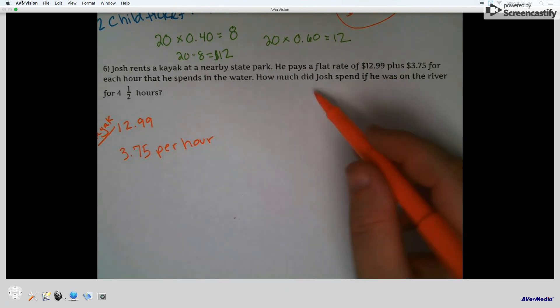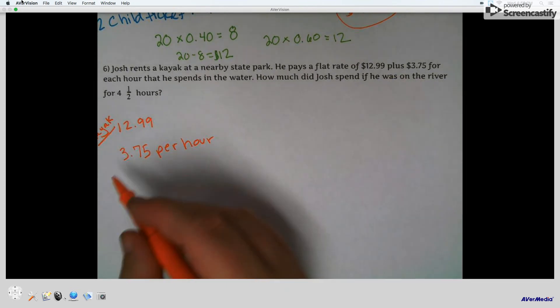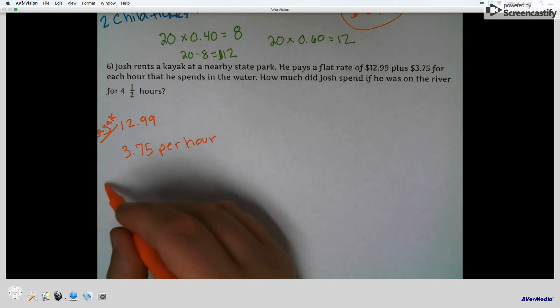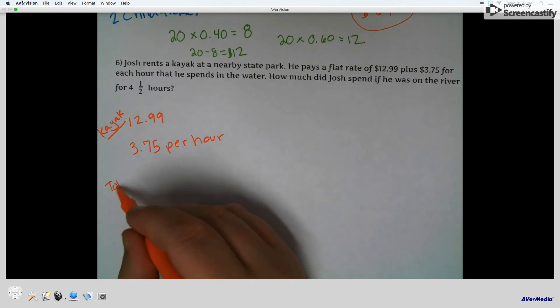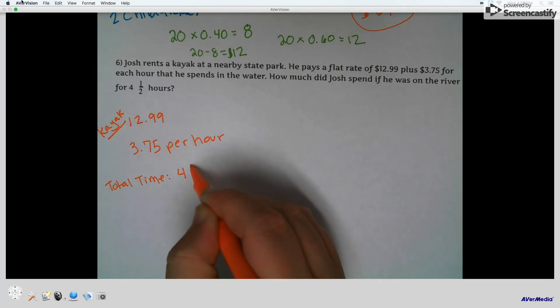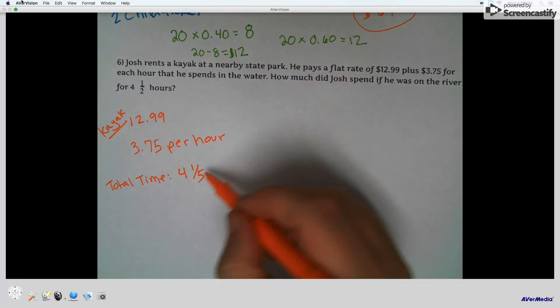Then he pays $3.75 per hour that he spends in the water, okay? How much did he pay, spend, if he was on the river for four and a half hours? So his total time is four and a half, which again, not four, a fifth. Four and a half can be simplified to 4.5 hours.